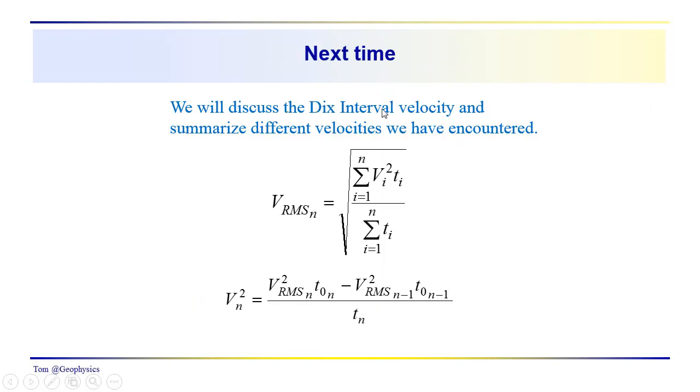So the next time we're going to take a look at the Dix, what's referred to as the Dix interval velocity, and summarize some of the different velocities that we're going to encounter, or that we already have encountered, and these are just some equations. This is the root mean square velocity, and this would be the square root of this would be what is referred to as the Dix interval velocity. So if you're working through a text, take a look at some of these topics, and then we'll come back and talk a little bit more detail about the ideas associated with this type of analysis here. The RMS velocity is actually obtained from your normal move-out velocity. It's not actually a RMS velocity. But we'll talk more about that next time. Thanks again for joining us, and see you then.